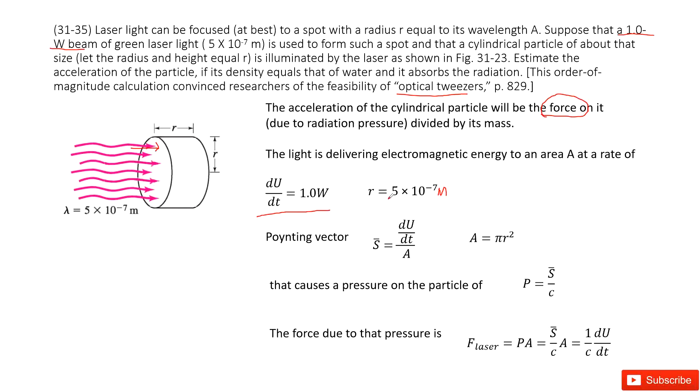Now from these two quantities, we can easily consider the Poynting vector. The Poynting vector S is the power divided by A. So this is dU/dt over A. And A is πr² for this cylindrical particle.